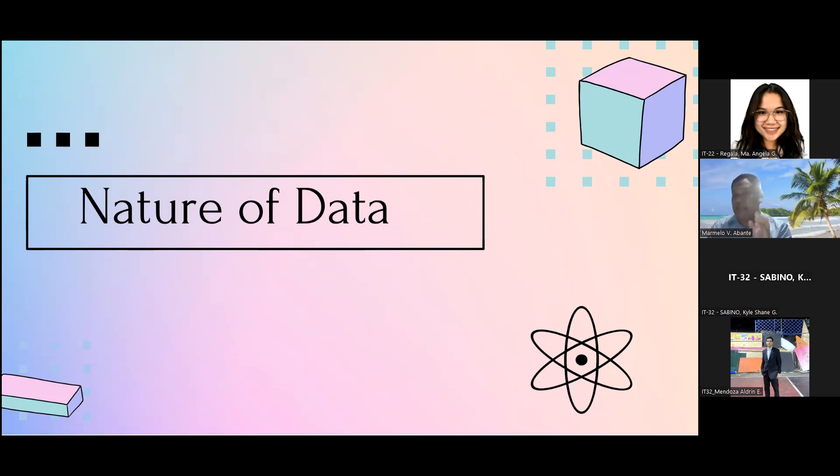Contrarily, quantitative data involves numerical measurements and counts involving objective analysis and statistical interpretation. It deals with quantifiable observation, employing methods such as experiments, structured surveys, or sensor data collection.